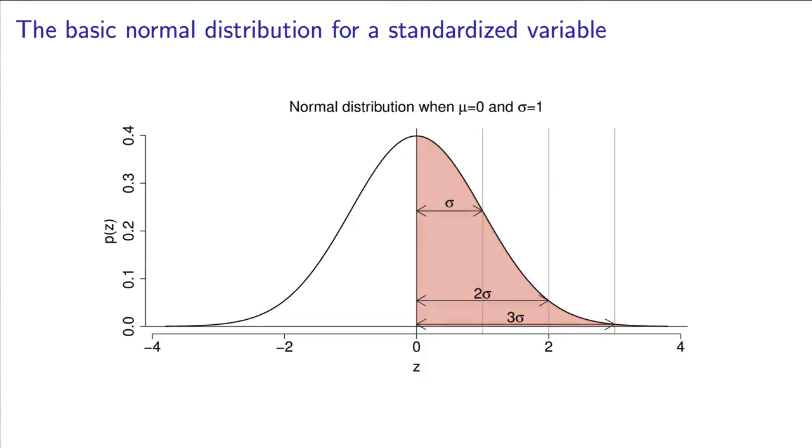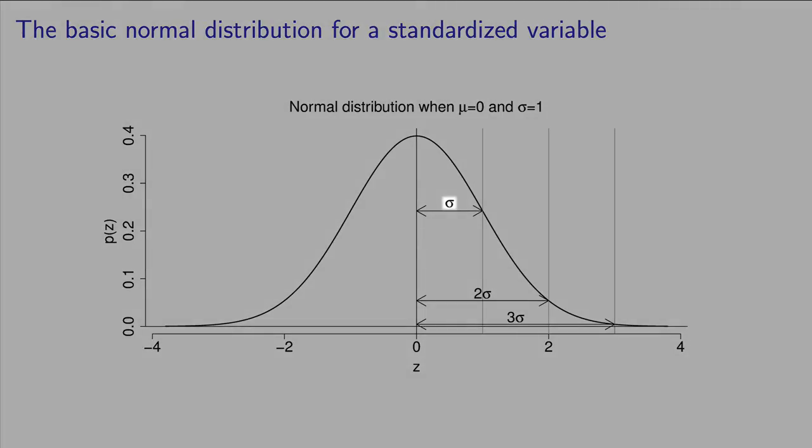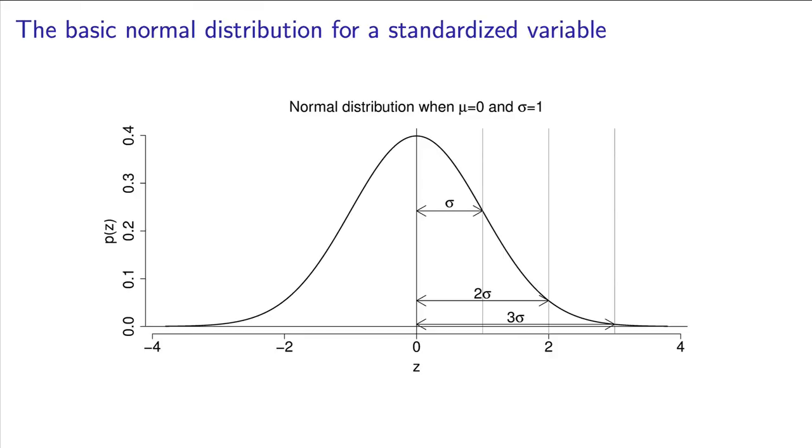Let's look at some other features. We introduced the concept of spread earlier, and we used the standard deviation, sigma, as the symbol for this. On the normal distribution, we see sigma here has a length of one unit. In fact, that is what sets the area under the curve to be 1.